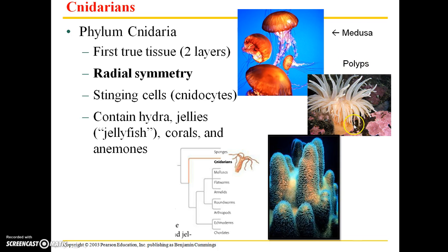These are sessile animals, so they're generally attached to rocks or other substrate, and the sea anemone here is an example of a polyp.